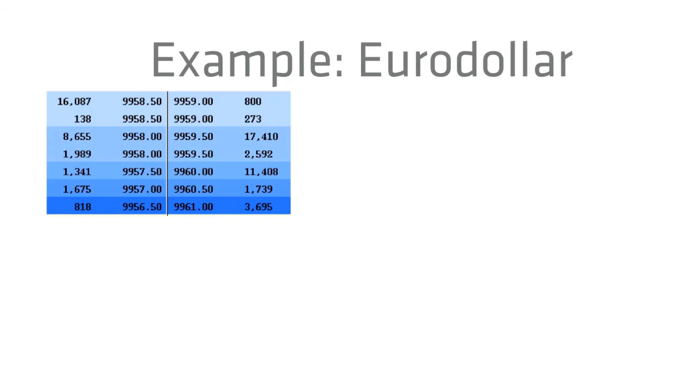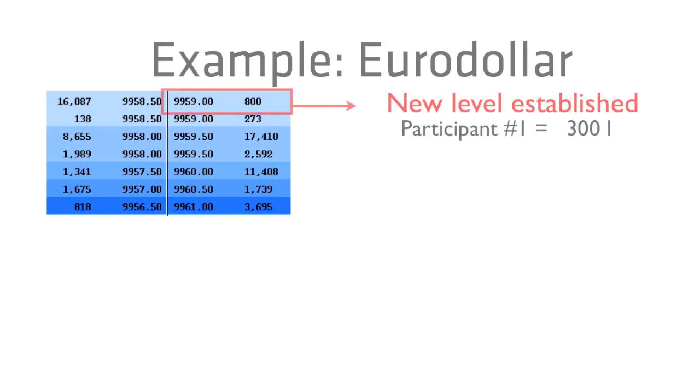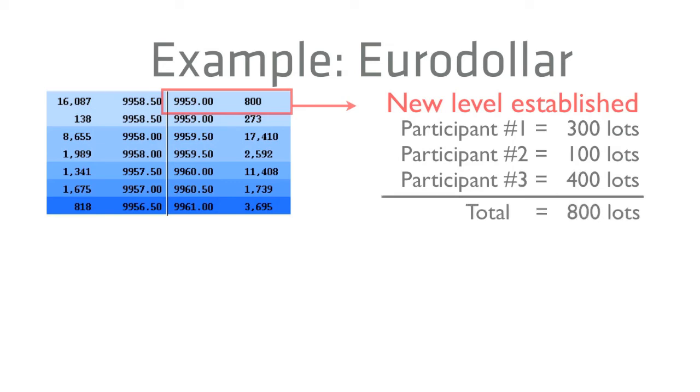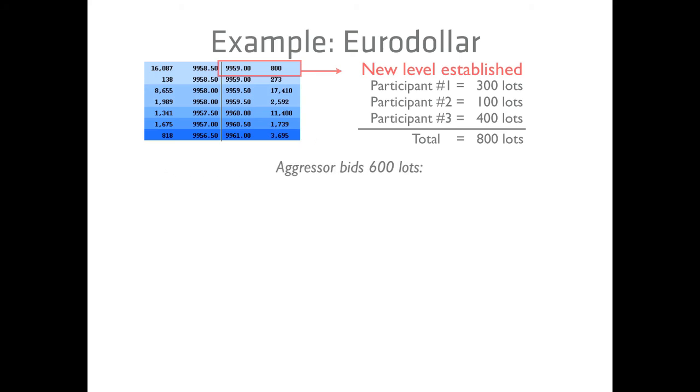Here's another example. This time showing how the matching rules are combined for Eurodollar orders. A level is established by participant 1 with 300 lots. Participants 2 and 3 join with 100 and 400 lots each. The total is 800 lots at the level. A market order to buy 600 lots is submitted.